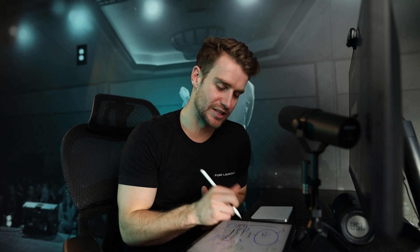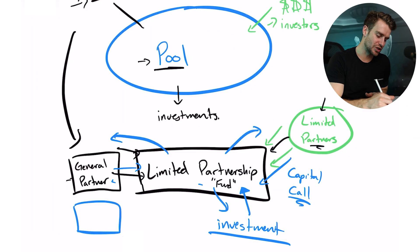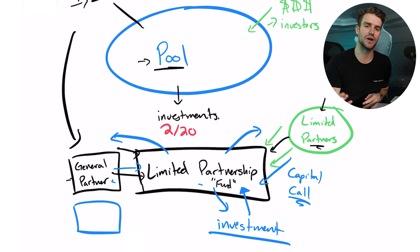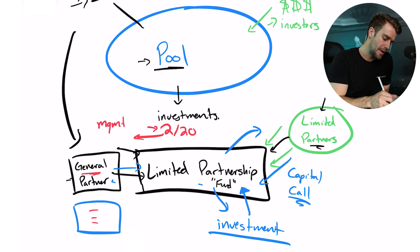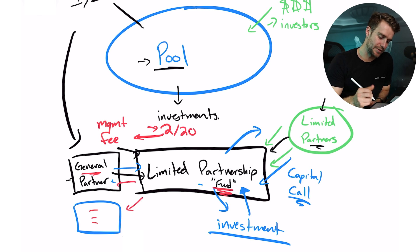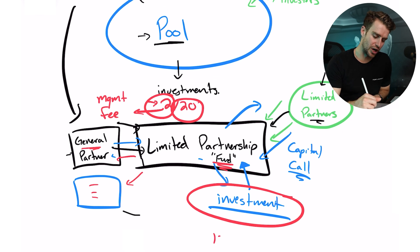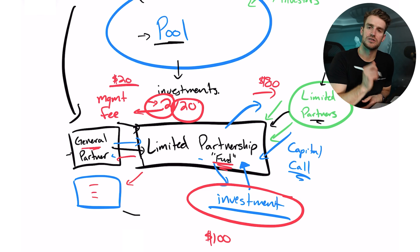Let's talk about that split between the general partner and limited partners. A lot of funds run what's called a two-and-twenty model. This has resulted in some of the wealthiest people on earth — the Forbes 100 is riddled with people making money from this structure. 'Two' means a two percent management fee — every year, two percent of the fund goes to the general partner. 'Twenty' means twenty percent of the profits. So if an investment generated a hundred dollars of profit, eighty dollars go to the limited partners and twenty dollars come to the general partner.